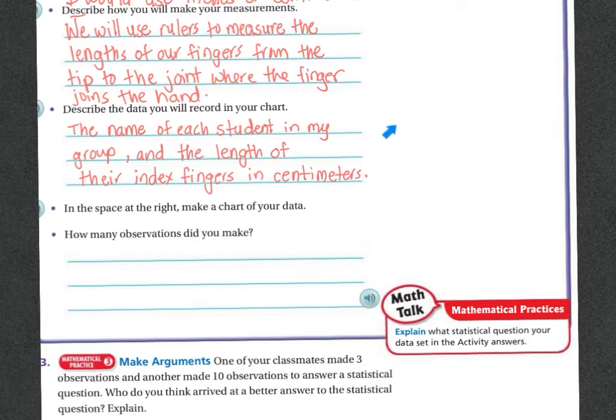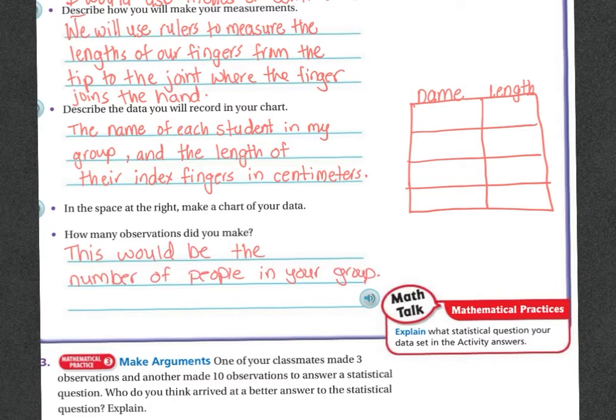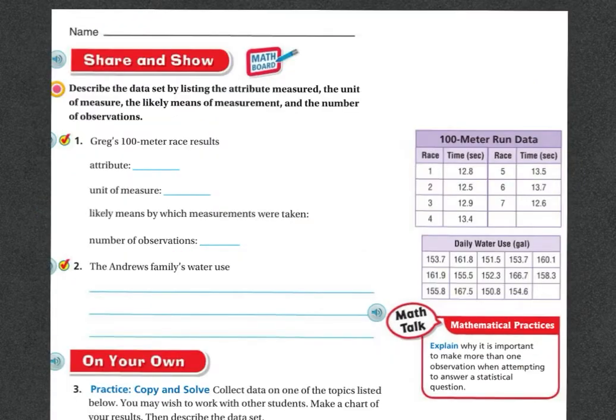Now, in the space here on the side of your journal, they want you to make a chart of your data. How many observations did you make? So you're going to make a chart something like this. You would have the students' names here and the length of the fingers here. Depending on how many people you have in your group, that would be how many observations you made. So if we had just these four people, then you would say four. If you had six people in your group, you would say six people and so on.